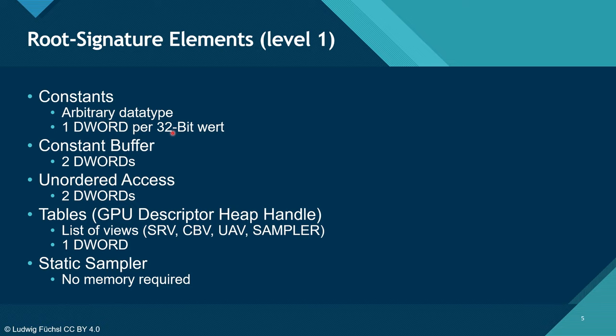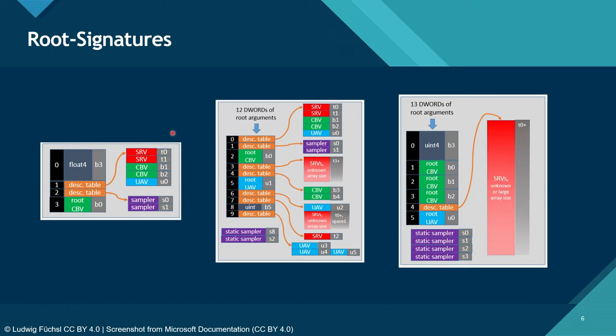You are also allowed to define static samplers — they are special because they require no memory at all. The compiler can directly eliminate them out of the root signature and just straightforwardly use them in the application. So here are some examples for root signatures.